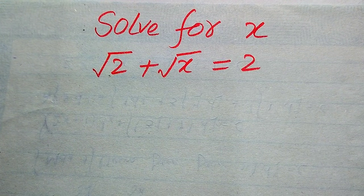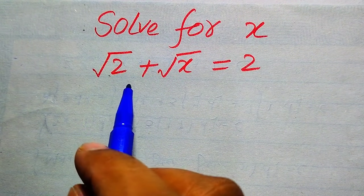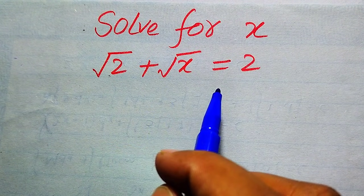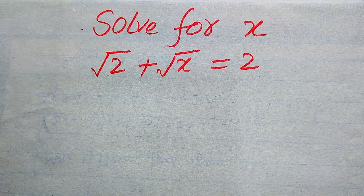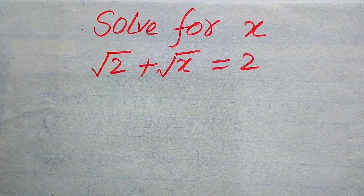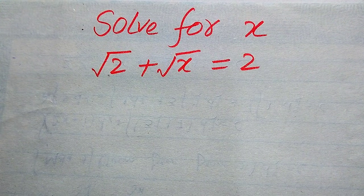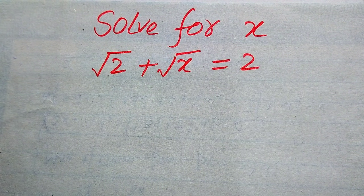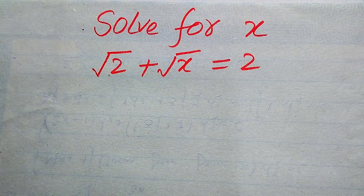Hello everyone. How to solve this problem for the values of x: if we have square root of 2 plus square root of x equals 2. We will solve this problem for all the values of x, and at the last we will verify which of the roots are solutions and which of the roots are extraneous roots. I hope you like this method, but if you have any other method in your mind, please don't hesitate to write it in the comment section.